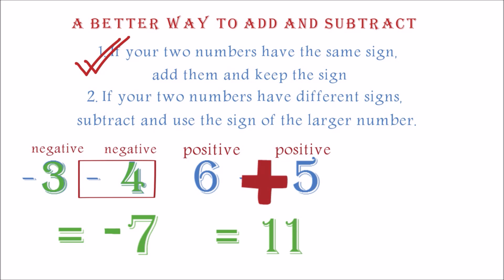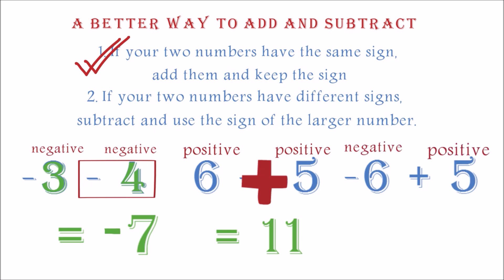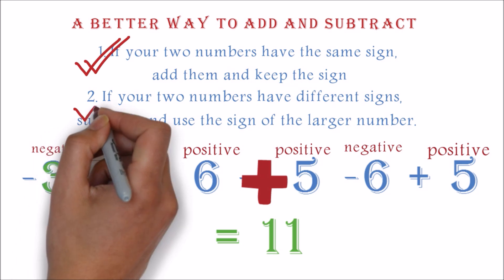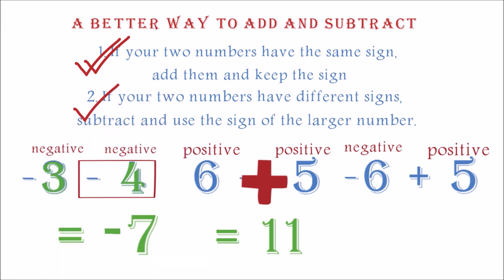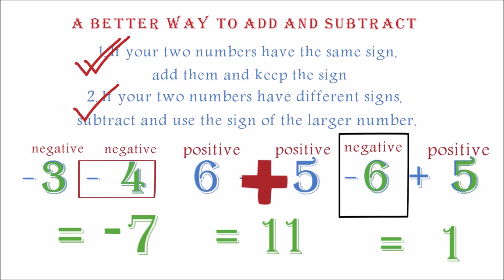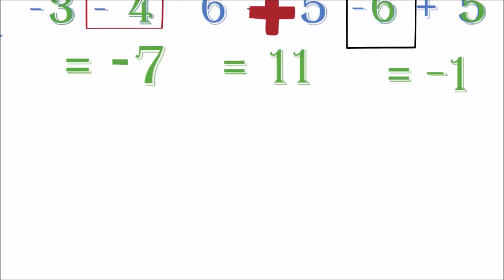Example three: negative six plus five. Here we notice that the six is negative and the five is positive. They therefore have different signs. The rule is: different signs — subtract and use the sign of the larger number. So we will do six minus five, which is one. The larger number was six and its sign is negative, so we use that. Final answer is therefore negative one.